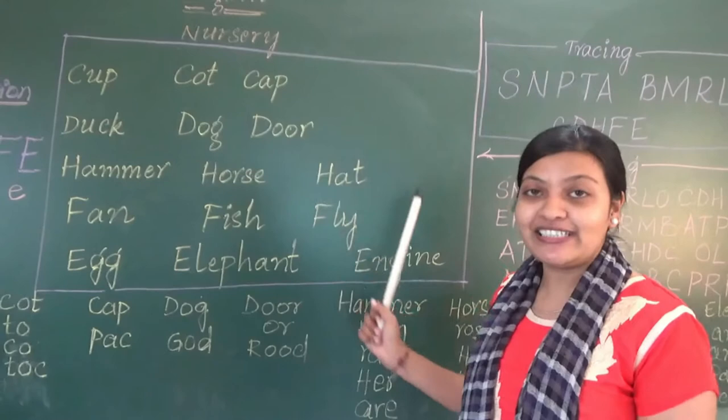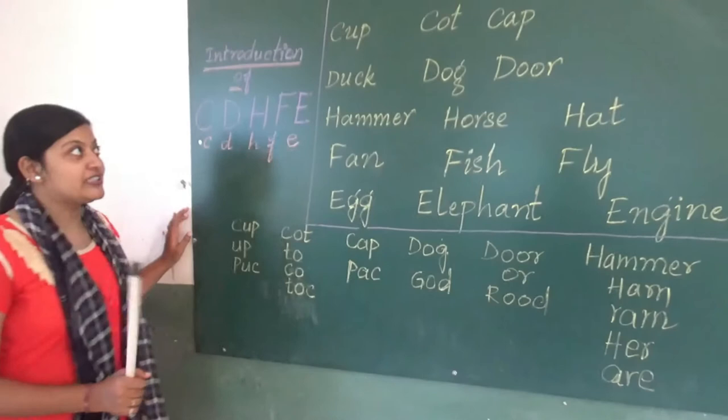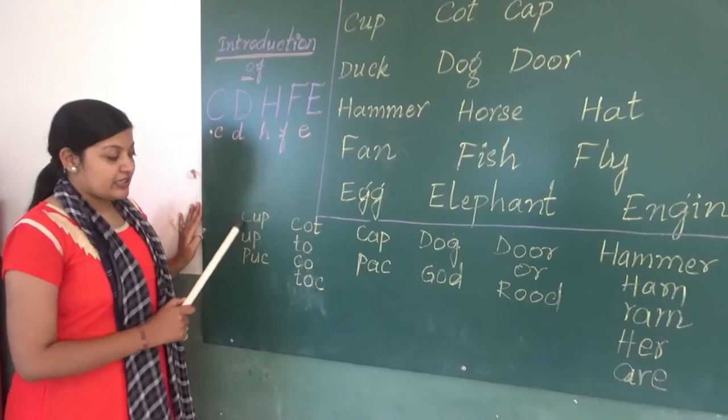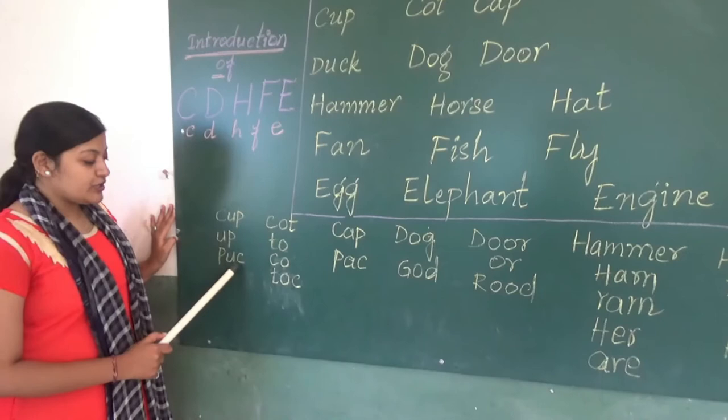By using all these letters, we can create more words. Let's see how. Taking the example of 'cup' — C, U, P — cup. By using cup, we can create more words, such as 'up' (U, P) and 'puc' (P, U, C).